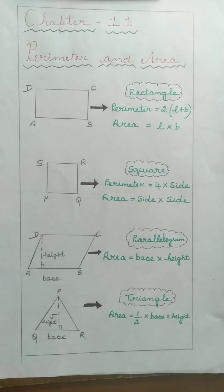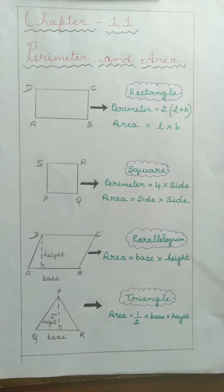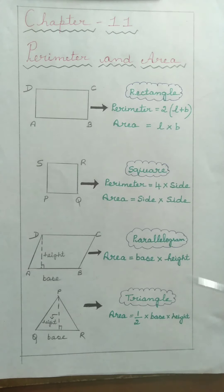In your previous classes, you have studied what is perimeter and area. We shall recall: perimeter is the distance around a closed figure, and area is the part of plane or region occupied by the closed figure. In 7th Standard, we shall study the perimeters of Rectangle, Square, Parallelogram, Triangle and Circles.